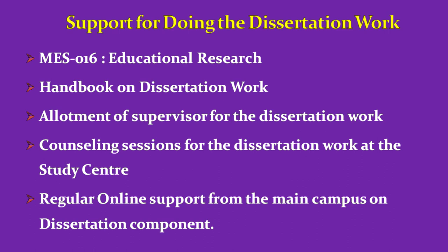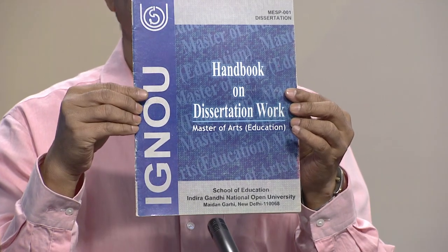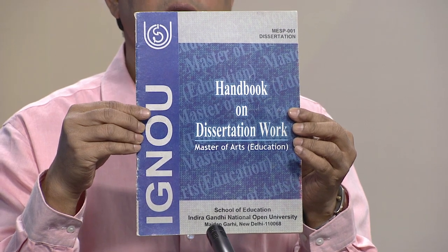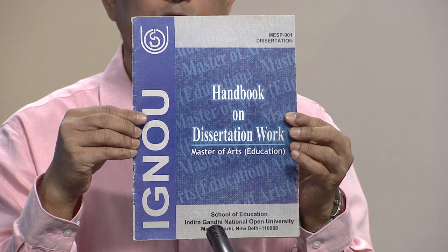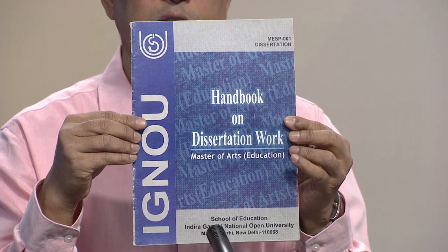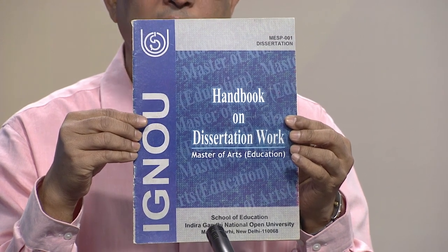The second support is the Handbook on Dissertation Work, which we have developed. You must have received this handbook, and the soft copy is also available in the eGyan course — you can download it from there if you have not received it. In this handbook, detailed discussions have been made on how to prepare a research proposal, its different components and steps, and a sample research proposal has also been prepared using a specific topic. Going through this handbook, you will not find any difficulty in preparing a research proposal.